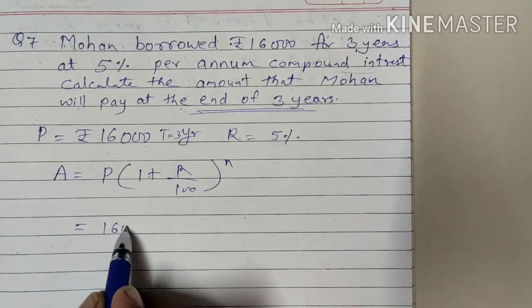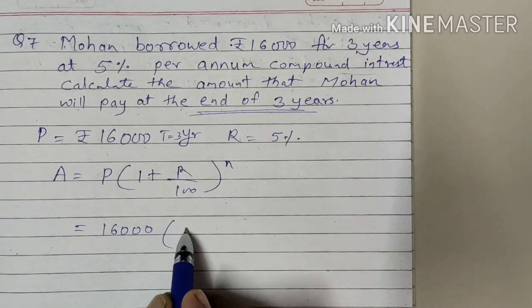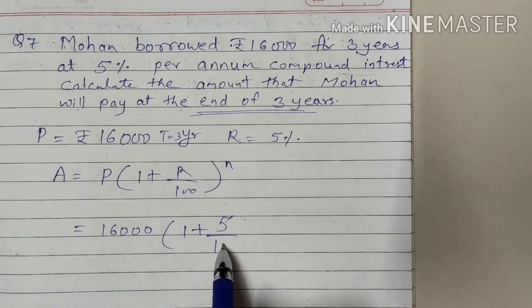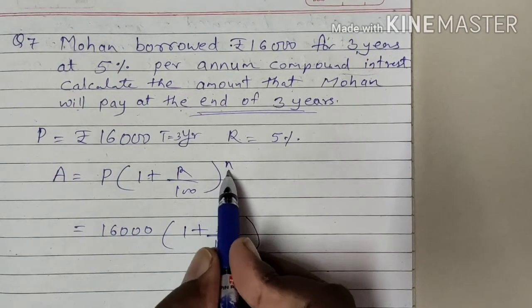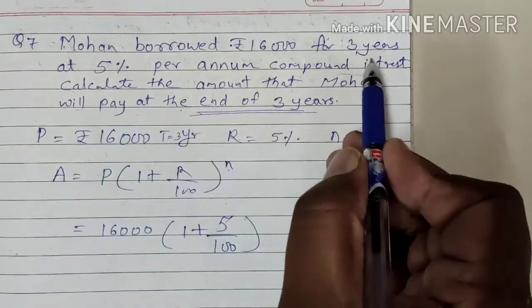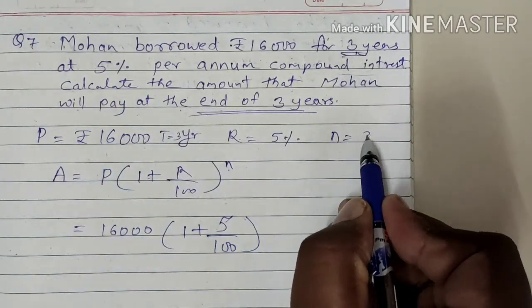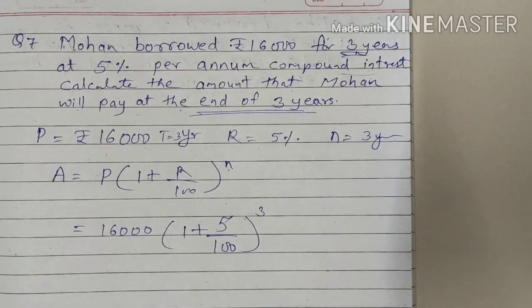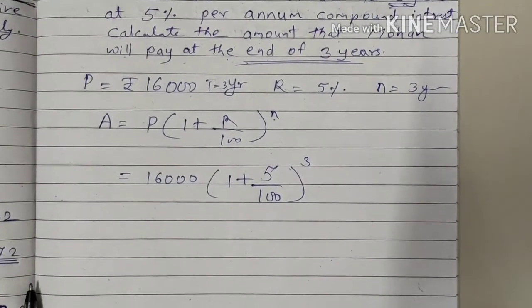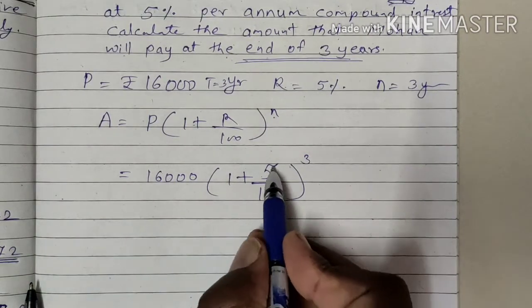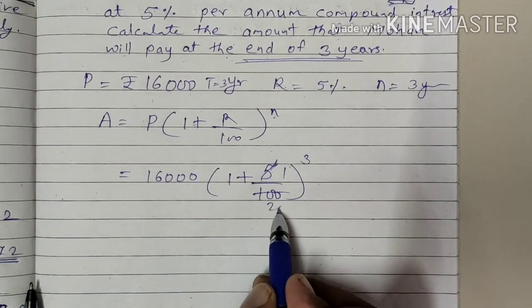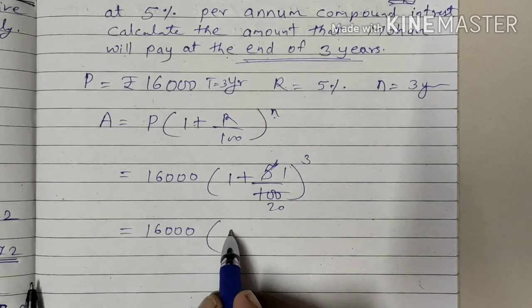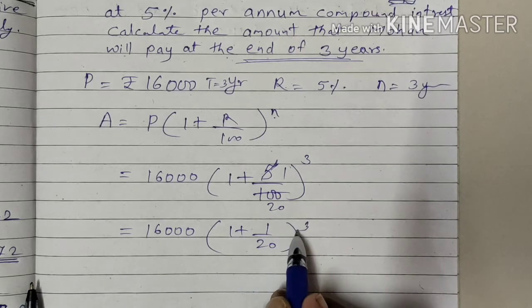Since we want a direct answer for the end of 3 years, we can apply this formula. So, P is 16,000, multiplied by 1 plus 5 upon 100, raised to n. N means the number of years, which is 3. So the value of N will be 3. Now we will make the calculation: 16,000 multiplied by (1 + 1/20) raised to 3.